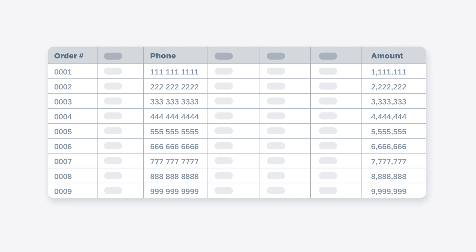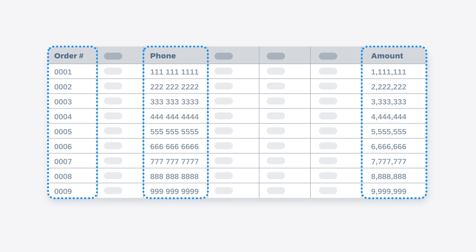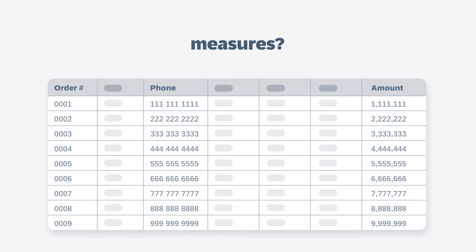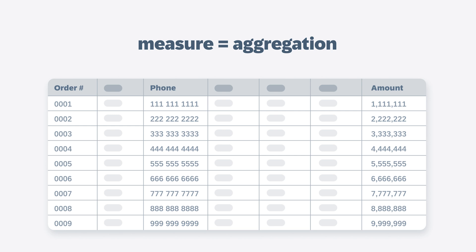Here, you can see several columns of numeric values. So they must all be measures, right? Not so fast. The special attribute that turns a number into a measure is aggregation — that means the numbers can be added up and used in calculations in meaningful ways.